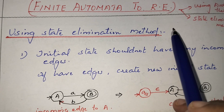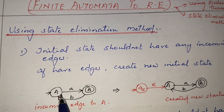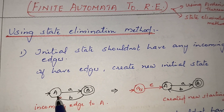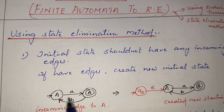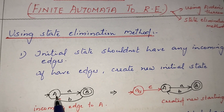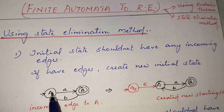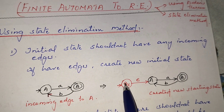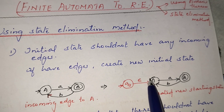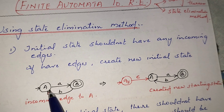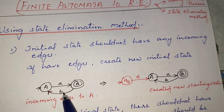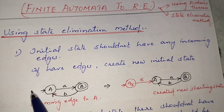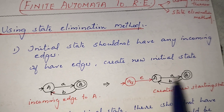In the state elimination method, we need to follow some rules. The first rule is: the initial state should not have any incoming edges. If there is any incoming edge towards the starting state, you need to create a new initial state with an epsilon move to the existing initial state.